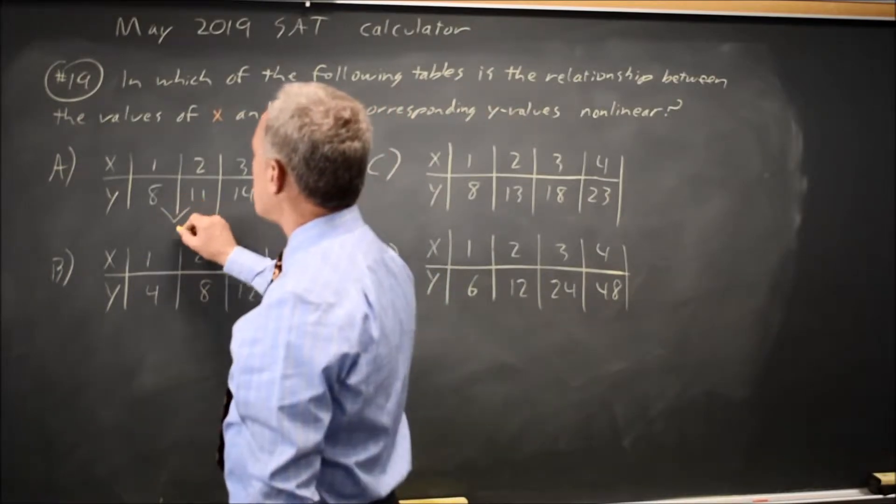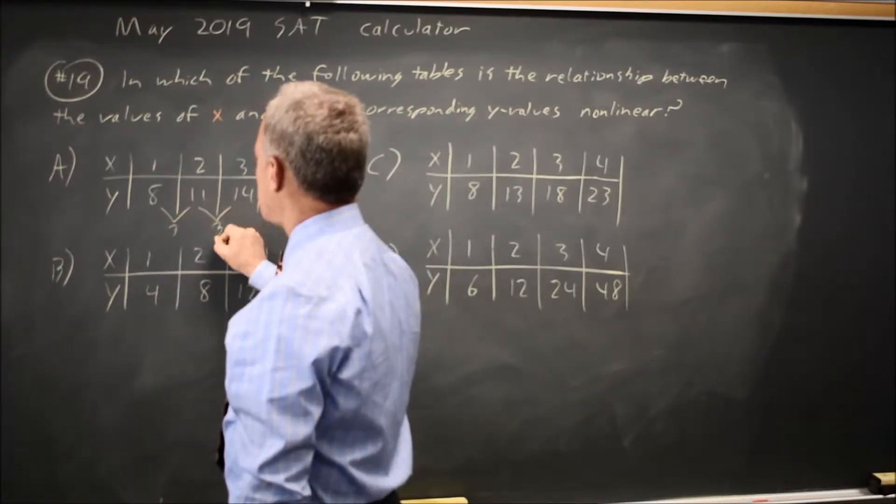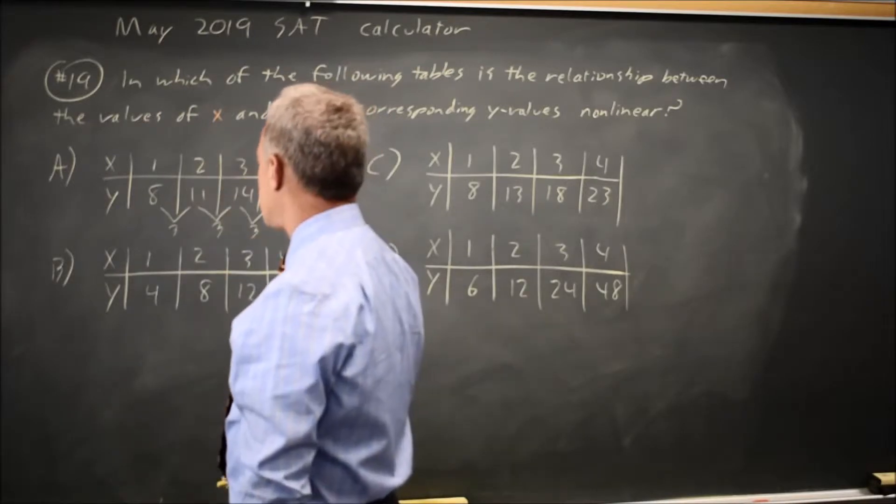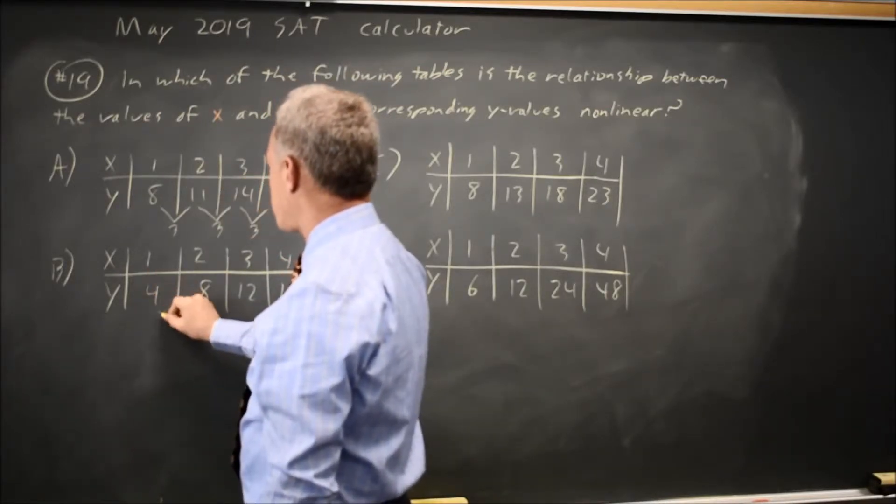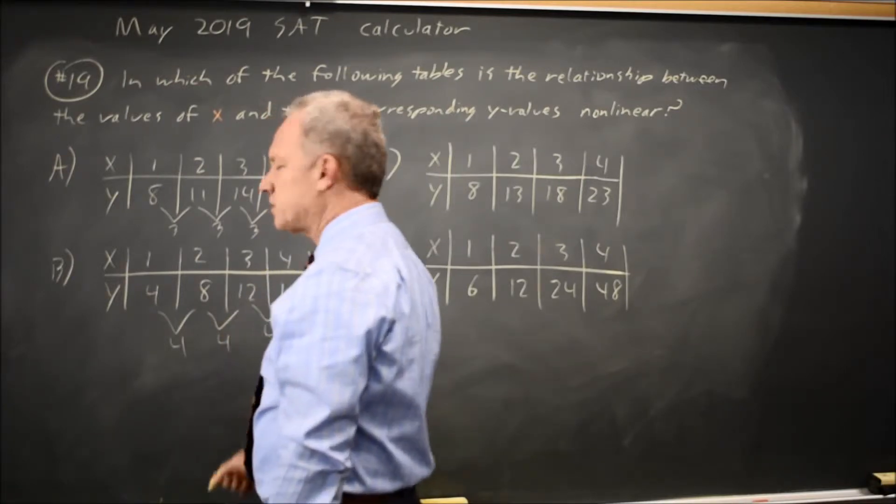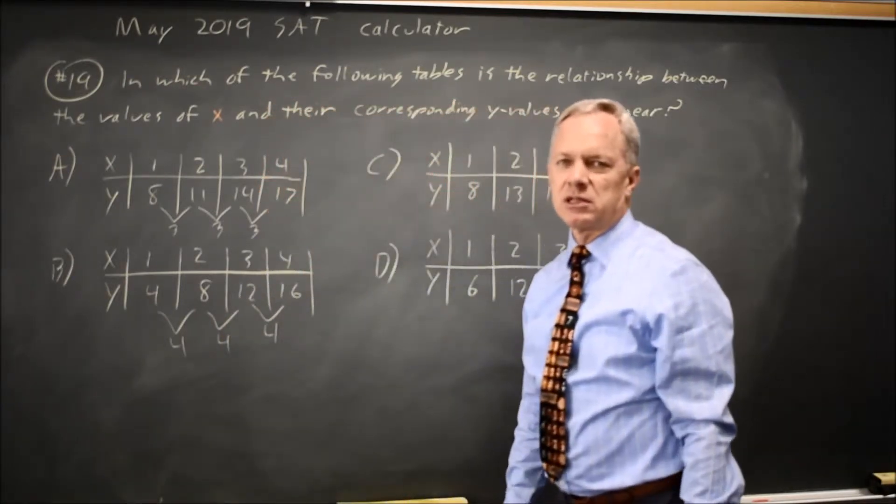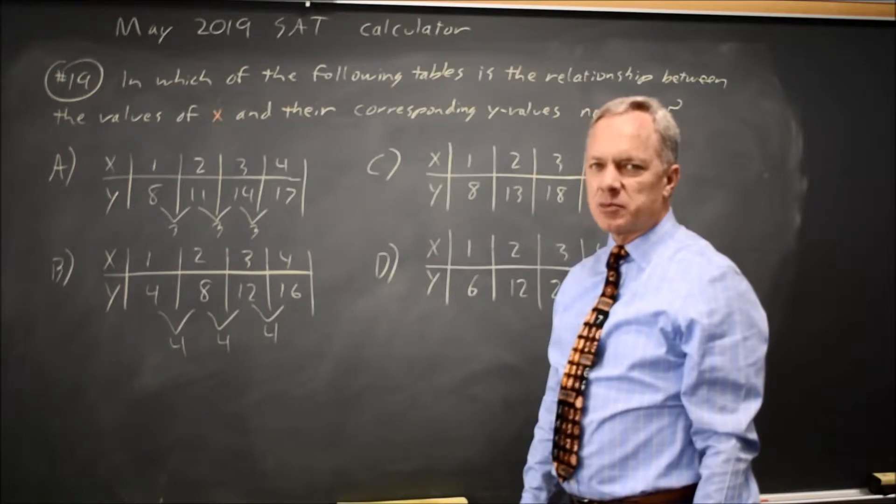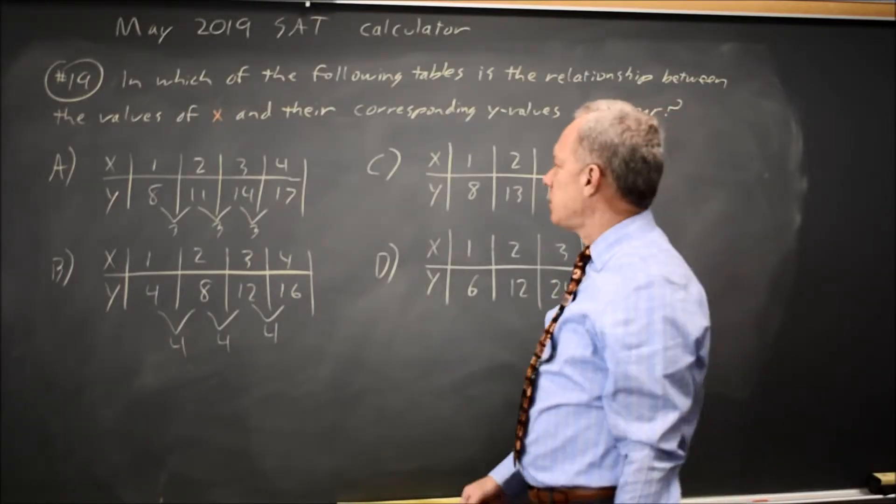In choice A, y goes up by 3, and then 3, and then 3, as x goes up 1 each time. Choice B, x is going up by 1 each time. y goes up by 4, 4, 4. Since these have a constant difference in y when x goes up by a constant, they have a constant slope, which means they're linear.